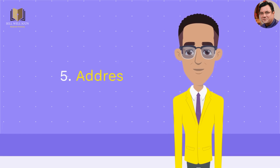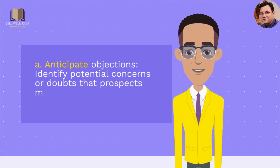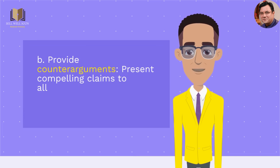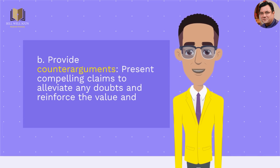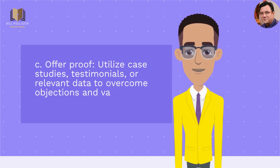5. Address objections. A. Anticipate objections — identify potential concerns or doubts that prospects may have and address them proactively. B. Provide counterarguments — present compelling claims to alleviate any doubts and reinforce the value and reliability of your solution. C. Offer proof — utilize case studies, testimonials, or relevant data to overcome objections and validate your claims.